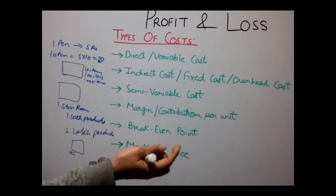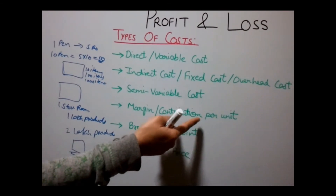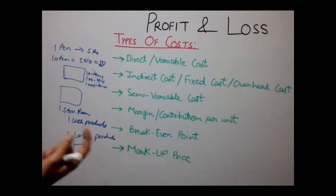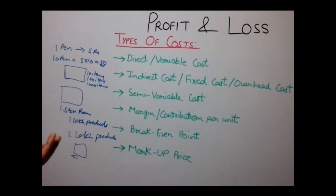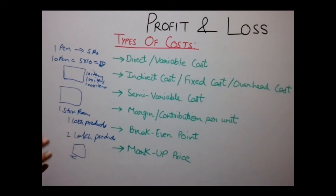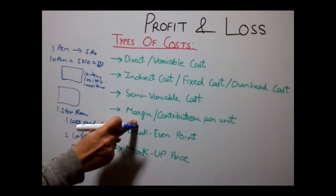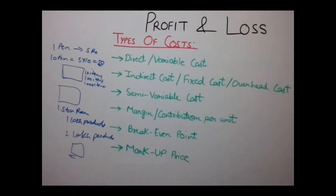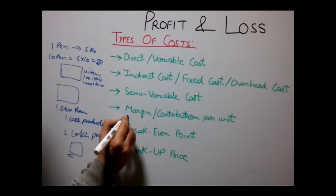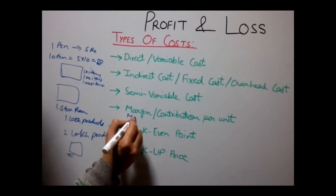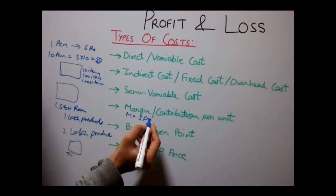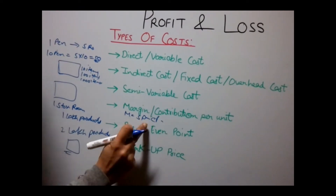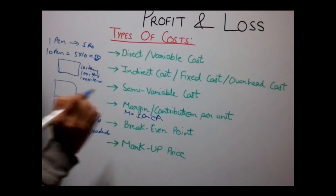Another type is Margin or Contribution Per Unit. This is a type of gain that manufacturers earn on their product. It is calculated as Selling Price minus Manufacturing Cost, i.e., Margin = SP minus CP.